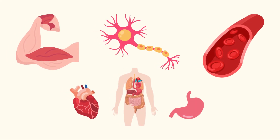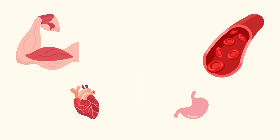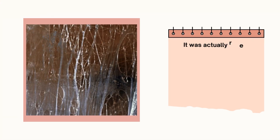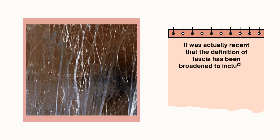Fascia's interactions with muscles, nerves, blood vessels, and organs really highlights its integral role in the body's structural and functional integration. Very recently, the definition of fascia has been broadened to include all collagenous-based soft tissues in the body, which also includes the cells that create and maintain the extracellular matrix.